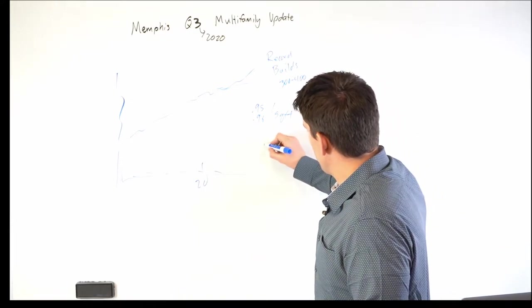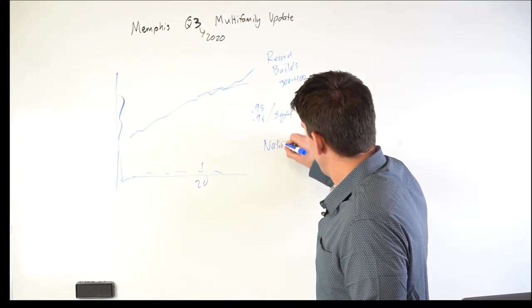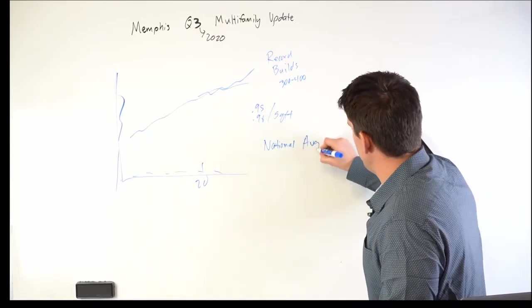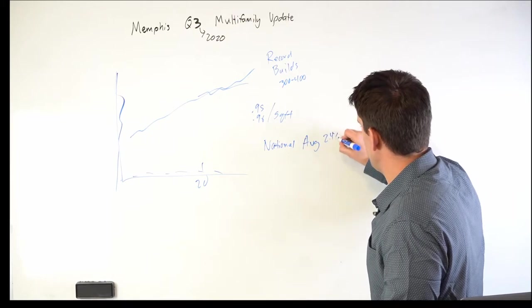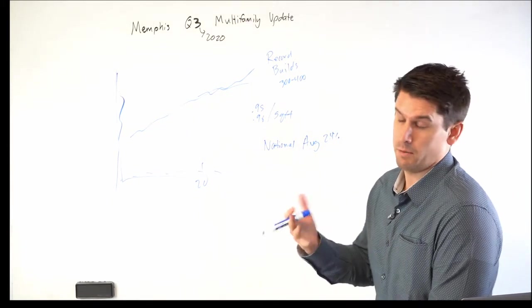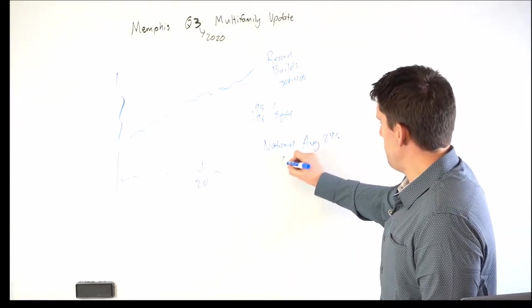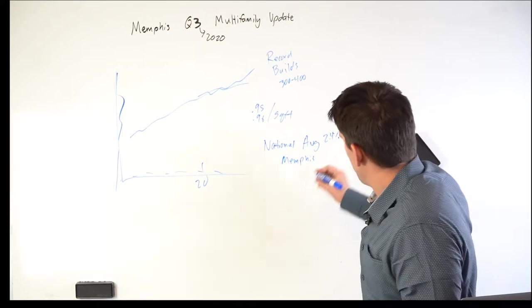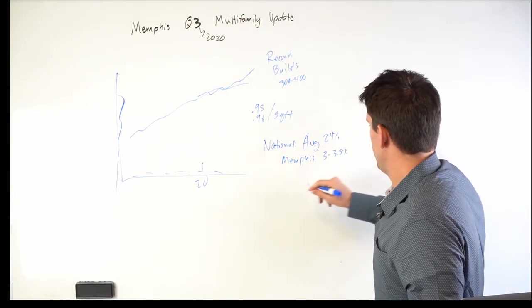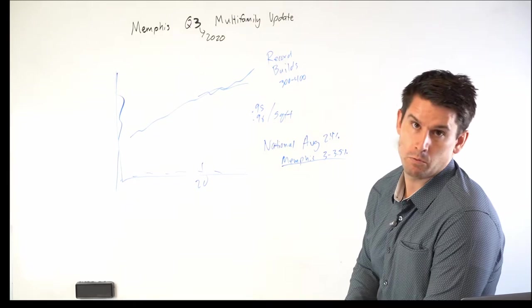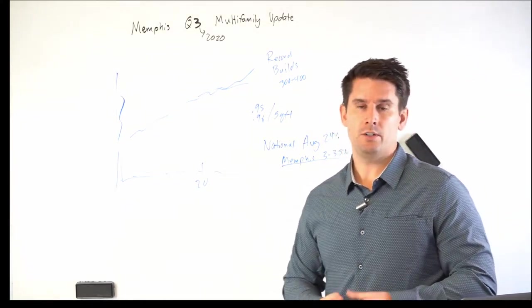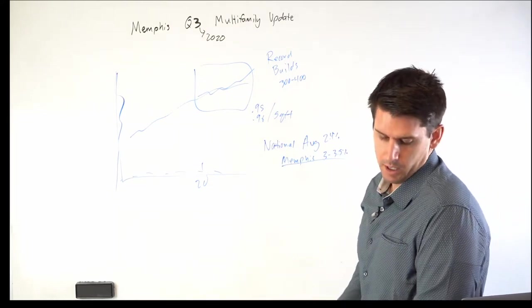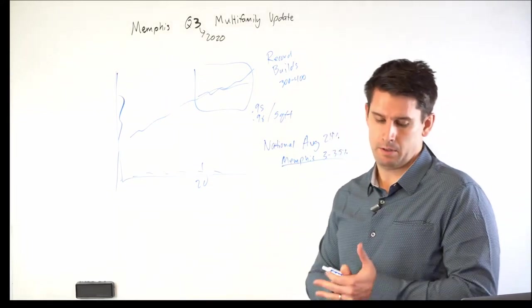The national average through COVID, rent increases has been around 2.4%. I had another video on that where some markets are down lower much, and some are up higher. Memphis has seen right around a 3% to 3.5% in terms of rent rates. So we've had a rent appreciation even through here, and as you can see through all of COVID, our asking rents have gone up. So it's just showing the supply and demand and everything like that.